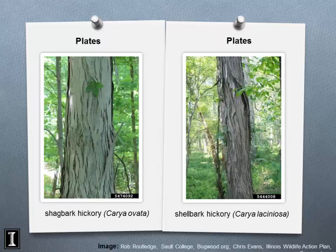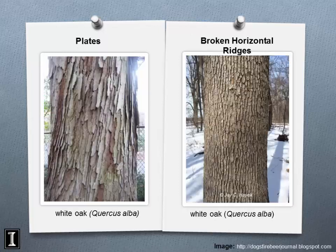On the left is shagbark hickory with its platey bark texture, and on the right is shellbark hickory. Shellbark hickory is typically found in bottomland floodplains and perched water tables, while shagbark hickory is almost always found on slopes or upland sites — it doesn't like to get its feet wet.